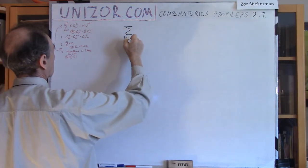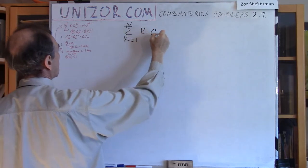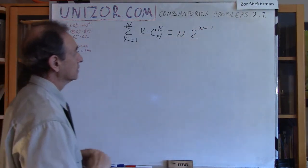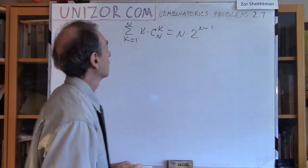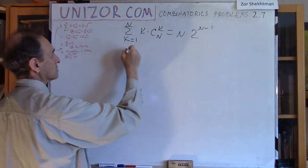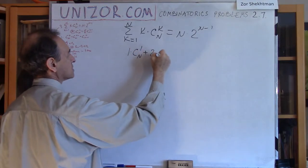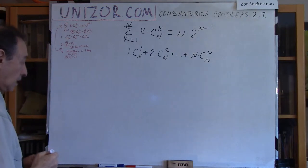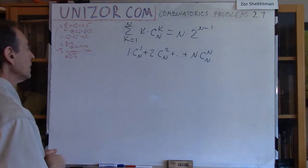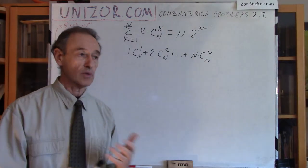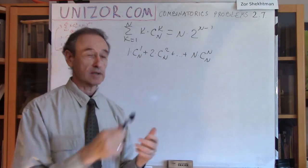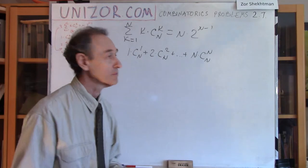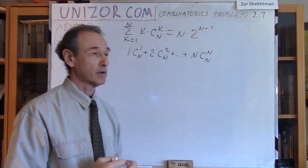Next: the sum from k to n of k times C(n,k) equals n times 2 to the power (n minus 1). Well, that seems a little bit more difficult. k is the summation index starting from 1, so it's 1·C(n,1) + 2·C(n,2) + ... + n·C(n,n). How can we deal with this? The idea is similar, but instead of converting into a difference, I have to drive toward something familiar. I'm not familiar with this sum, but I am familiar with the sum of all C(n,k).